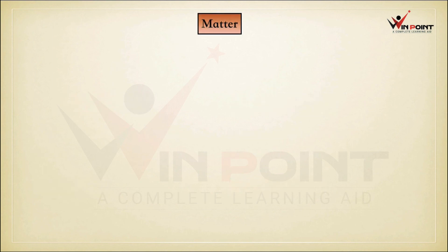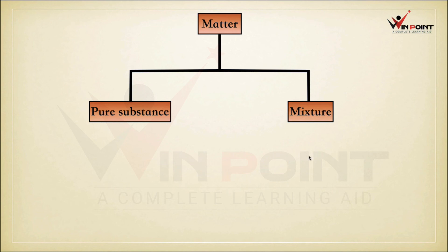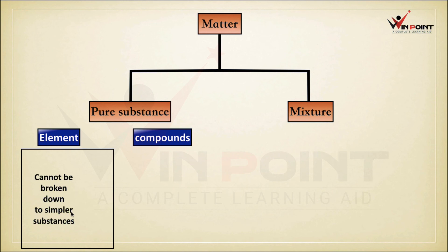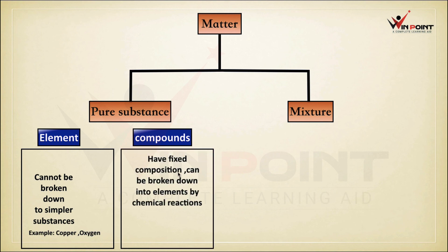Now we discuss matter. There are two types: pure matter and mixture. Pure matter is classified into elements and compounds. Elements, like oxygen, nitrogen, copper, and argon, are the purest form and cannot be broken down into simpler substances. Compounds are combinations of elements, like water (hydrogen and oxygen), have a fixed composition, and can be broken down into elements by chemical reaction. Examples: water and methane.